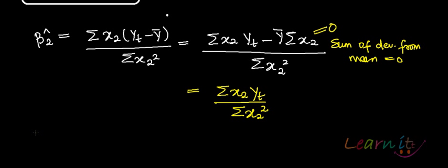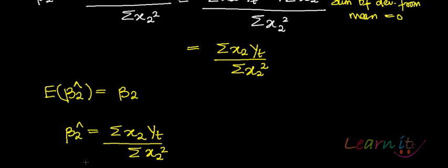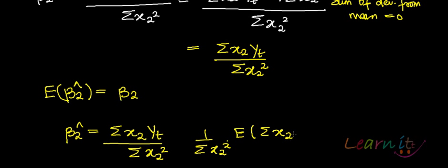In order to prove that β̂₂ is an unbiased estimator of β₂, you need to prove that E(β̂₂) = β₂. You have estimated β̂₂ as summation x₂ Yt upon summation x₂ squared. Note that 1 upon summation x₂ squared is a non-stochastic term, so it will come out of the expectation sign. What is left is x₂ Yt.